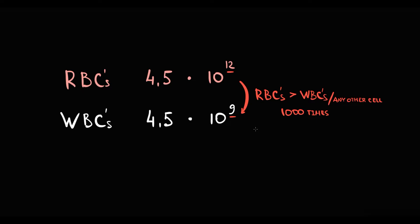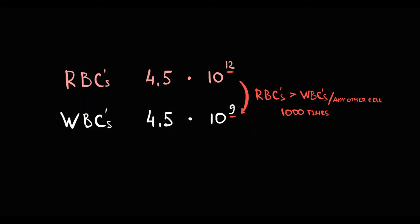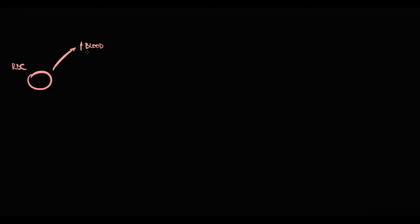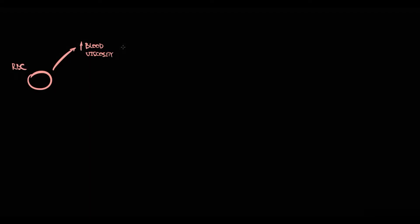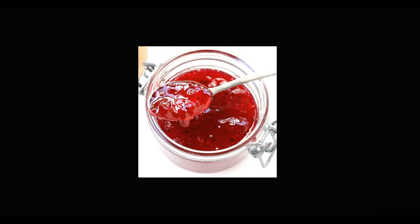Because red blood cells are the most abundant cells in the blood, with increasing red blood cells, blood viscosity increases the most. So in polycythemia, blood becomes extremely viscous, and this creates serious problems.